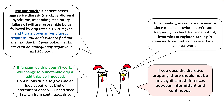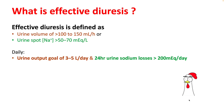I'll use a furosemide drip along with a bolus and titrate down as per diuretic response. Most of the time using an intermittent method I've found the patient is still net even or inadequately negative in the last 24 hours. If a furosemide drip doesn't work, I will change it to a bumetanide drip and add thiazides if needed. It also gives me an idea about what intermittent dose I'll need once I switch from continuous drip.